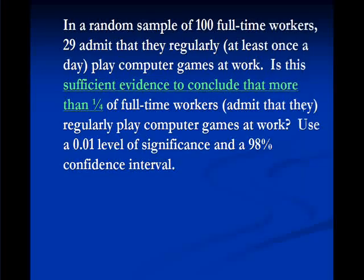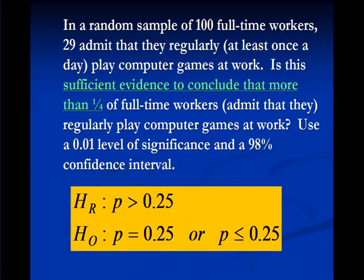Do we have enough evidence to conclude that more than one-fourth of full-time workers regularly play computer games at work? It's a population proportion. We want to know if we have enough evidence to conclude that it's more than one-fourth, that is, greater than 0.25. That's our research hypothesis. The null hypothesis then is the proportion is equal to 0.25, or p less than or equal to 0.25.